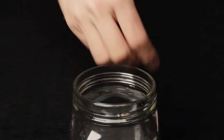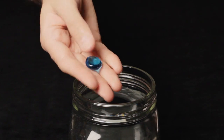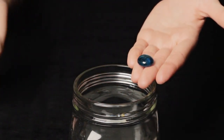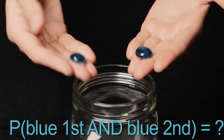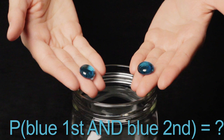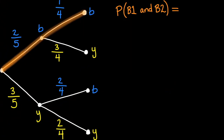We can answer questions like: what is the probability of drawing two blue marbles in a row? In other words, what is the probability of drawing a blue marble first and a blue marble second? This event is represented by these two branches in the tree diagram. We have a two-fifths chance followed by a one-fourth chance. We multiply these to get two-twentieths, or one-tenth. The probability of drawing two blue marbles in a row is one-tenth.